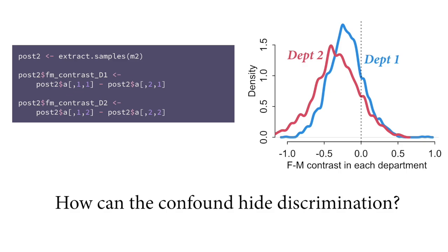We compute the contrast for department 1 and department 2 — the probability that individuals of gender 1 are admitted versus gender 2. Here I'm doing it on log odds, but it's still contrasts. We do it for department 1 in blue and department 2 in red. What I want you to see is that it doesn't show any difference — there's a very slight disadvantage to gender 1, which we're thinking of as women in this example. But we know from the simulation that department 2 is discriminatory and department 1 isn't. So why do these departments look the same in the analysis? The confound of ability has actually hidden the discrimination in this example.